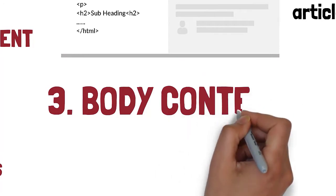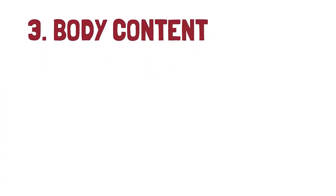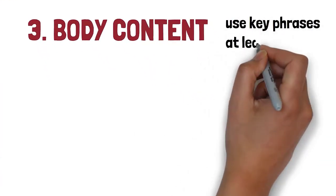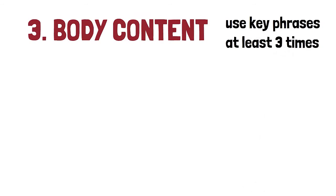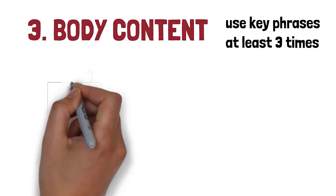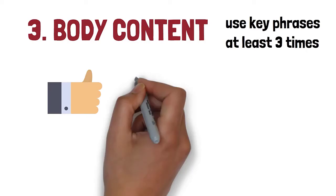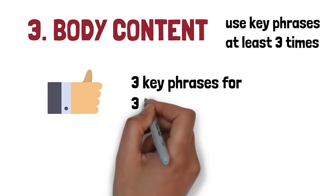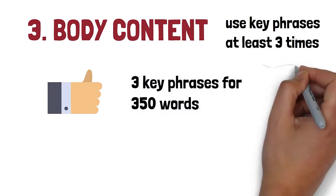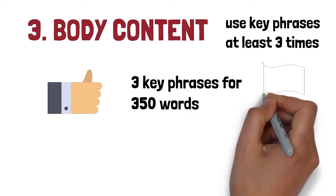Third is body content. In the body of your content, you can use the key phrase at least three times. But make sure to put it in sentences that make sense, not just randomly. The rule of thumb is three key phrases per 350 words. Just be careful of overdoing it.